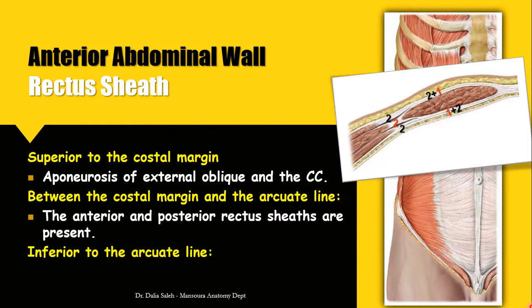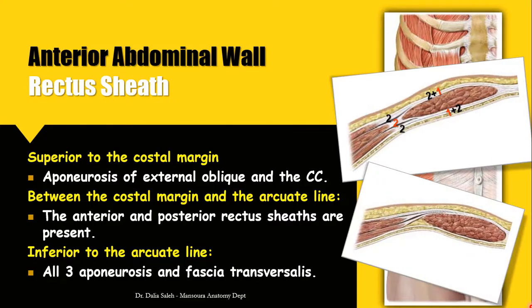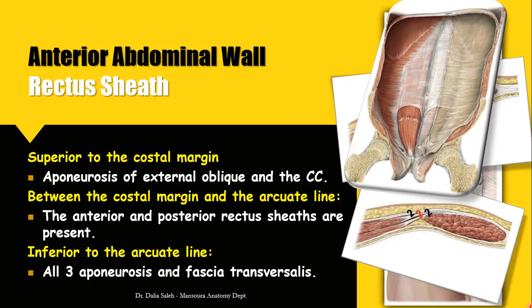The third part of the rectus sheath is below the arcuate line. Here the main function of the infraumbilical abdomen is to support the belly. In cross-section, the anterior wall of the rectus sheath is made by the bilaminar aponeurosis of all three muscles — external oblique, internal oblique, and transversus abdominis — while posteriorly the rectus sheath is made only by the fascia transversalis, which covers the posterior aspect of the rectus abdominis below the arcuate line.